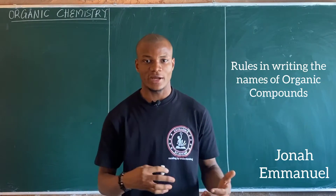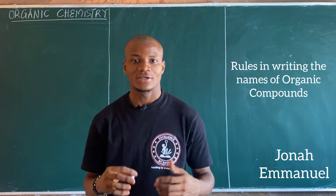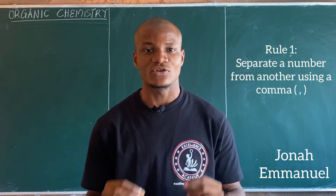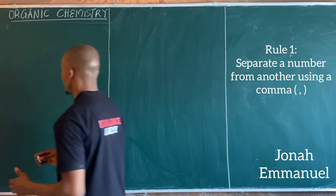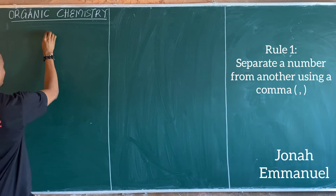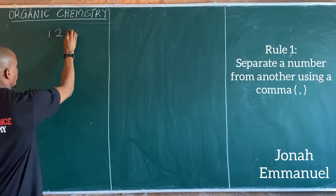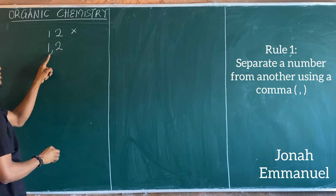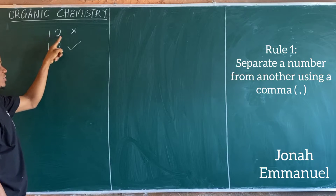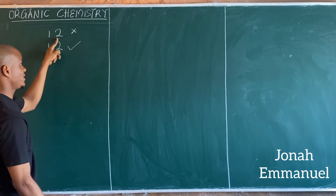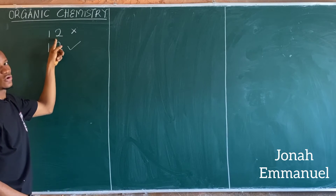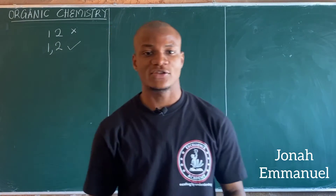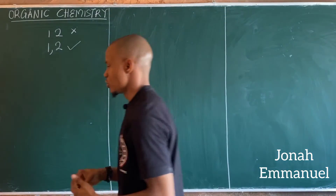The first rule when it comes to writing the names of organic compounds: separate numbers from numbers using a comma. For example, if I want to write 1,2 — I don't write '12', that would be wrong. What you do is write '1,2', separating one number from another using a comma. If I see '12' I'm not sure if it's '1,2' or just '12', so separate one number from another using a comma. That's the first rule.